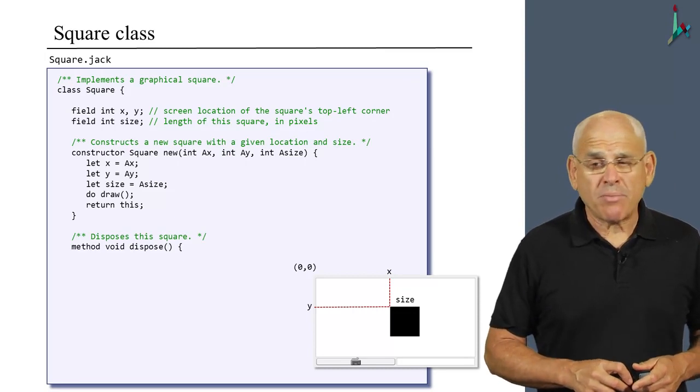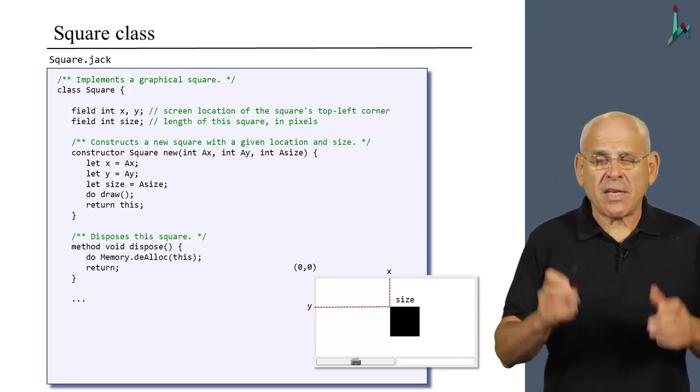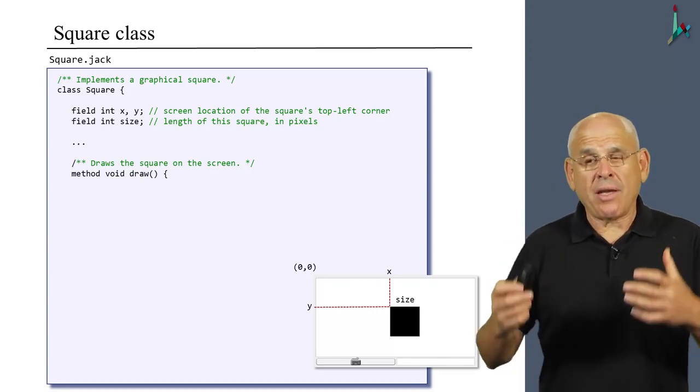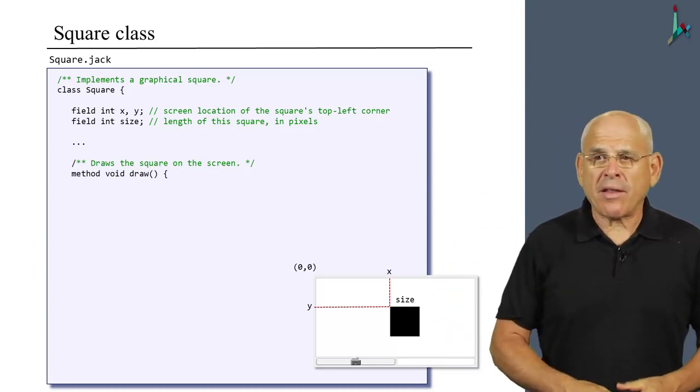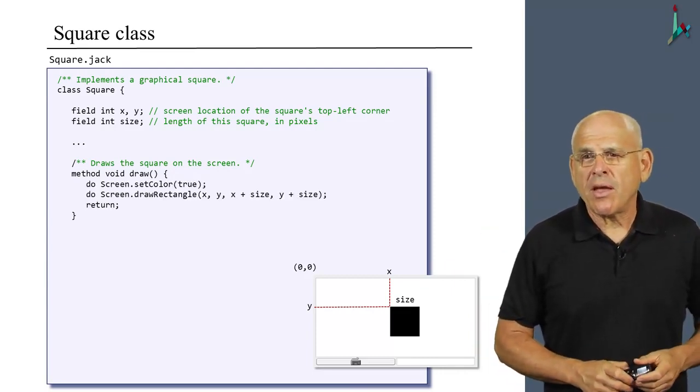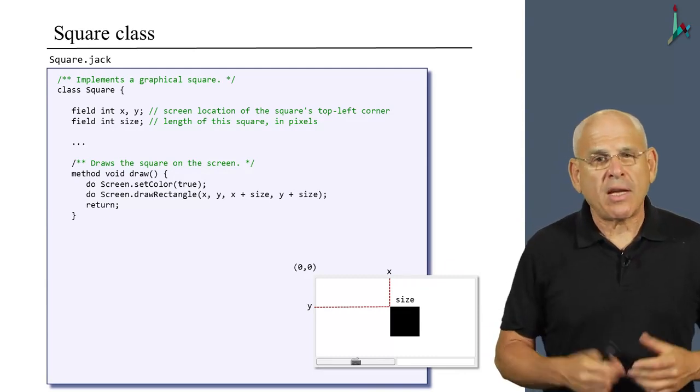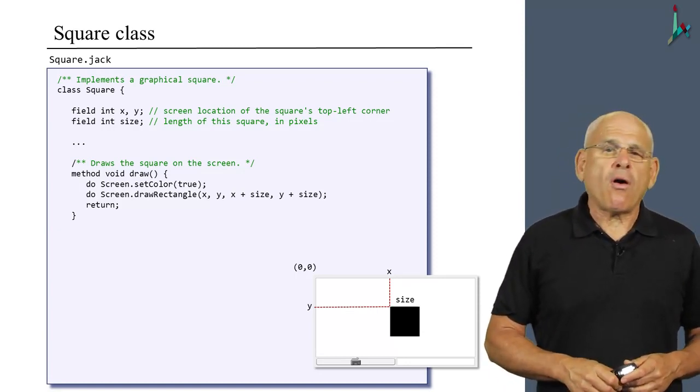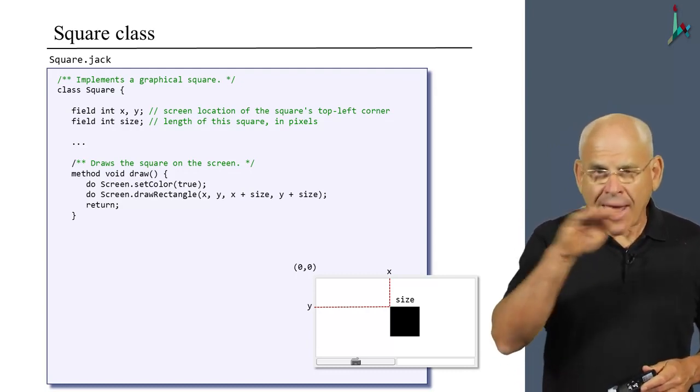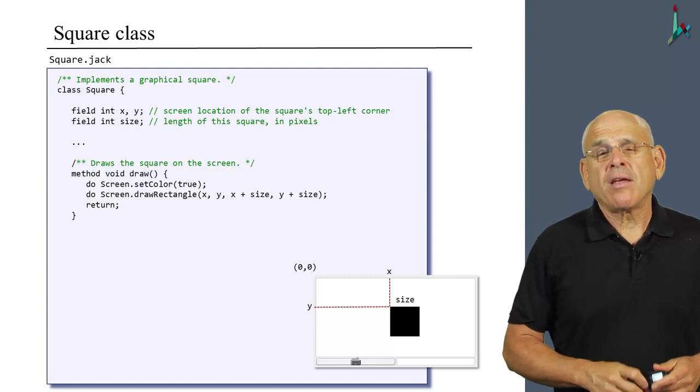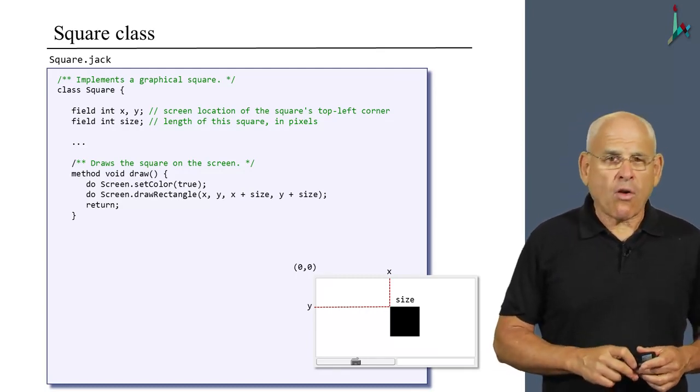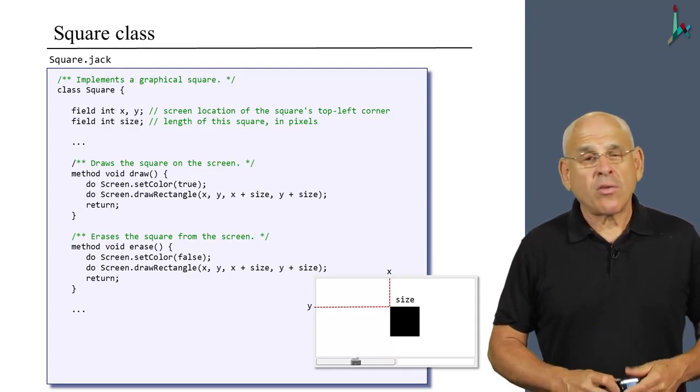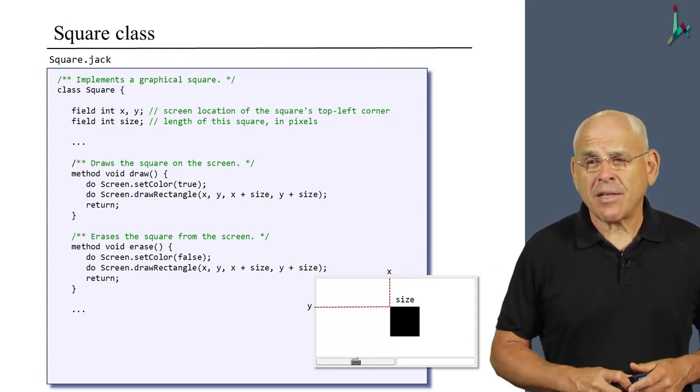The dispose method is standard. There's nothing special about it. Then we have the draw method, which actually takes this logical square and finally shows it to the user. How do we do it? We set color to true, meaning that we select black. Then we use the drawRectangle operating system function to draw a rectangle that has a length and height which are the same. So effectively, we are drawing a square using the standard drawRectangle routine. What about Erase? Erase does exactly the same thing using the background color, using false, which is interpreted as white.